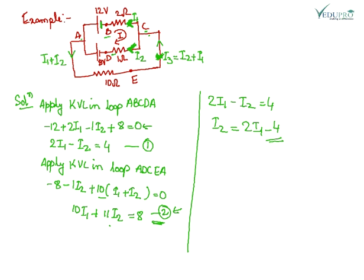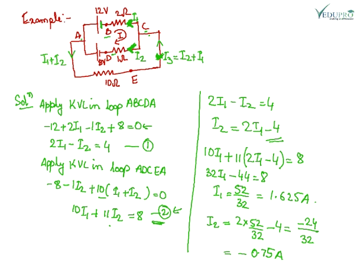Solving the two equations, from equation one: 2·I1 minus I2 equals 4, so I2 equals 2·I1 minus 4. Substituting into equation two: 10·I1 plus 11·I2 equals 8. Solving gives I1 equal to 1.625 amperes. Substituting back, I2 equals minus 0.75 amperes. The negative sign indicates the actual current flows in the opposite direction to what was assumed. There is another method using Cramer's rule and determinants.